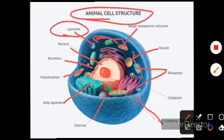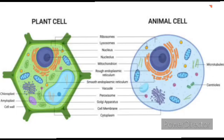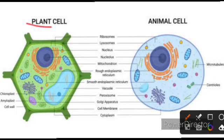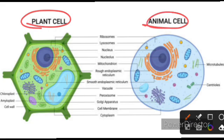Next, plant cell. Here is a comparison of plant cells versus animal cells. Ribosomes — present in both plant cells and animal cells. Lysosomes, nucleus. Nucleus present in both plant cells and animal cells. Cytoplasm cells, animal cells, midpoint.